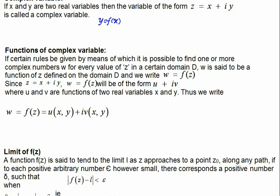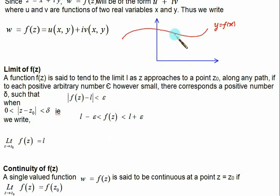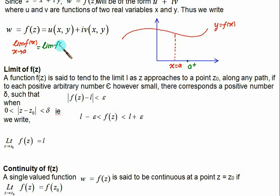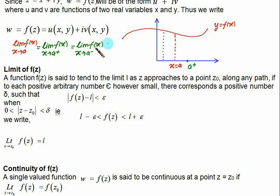Recall that in the case of limits, if we have y = f(x) and we want to check the limit at x = a, we normally use left-hand limit and right-hand limit. The limit as x tends to a⁺ must equal the limit as x tends to a⁻, and if this value equals f(a), we say the function is continuous. So we approach the point from the left side and right side — there are only two possible ways.